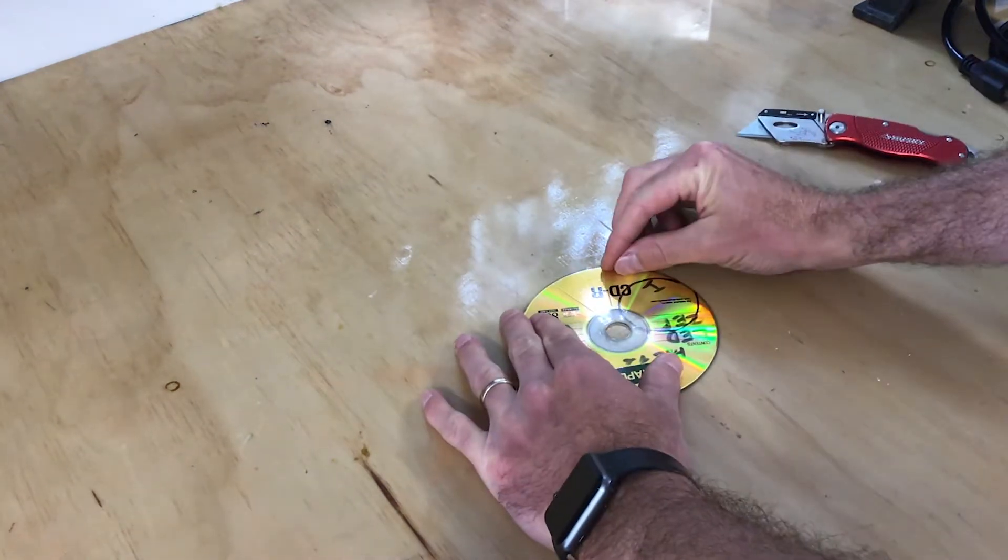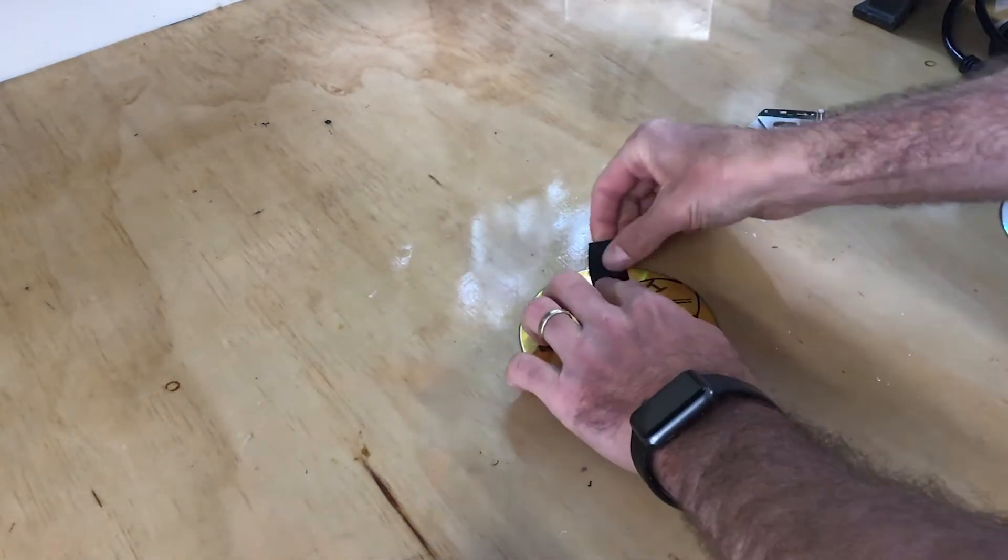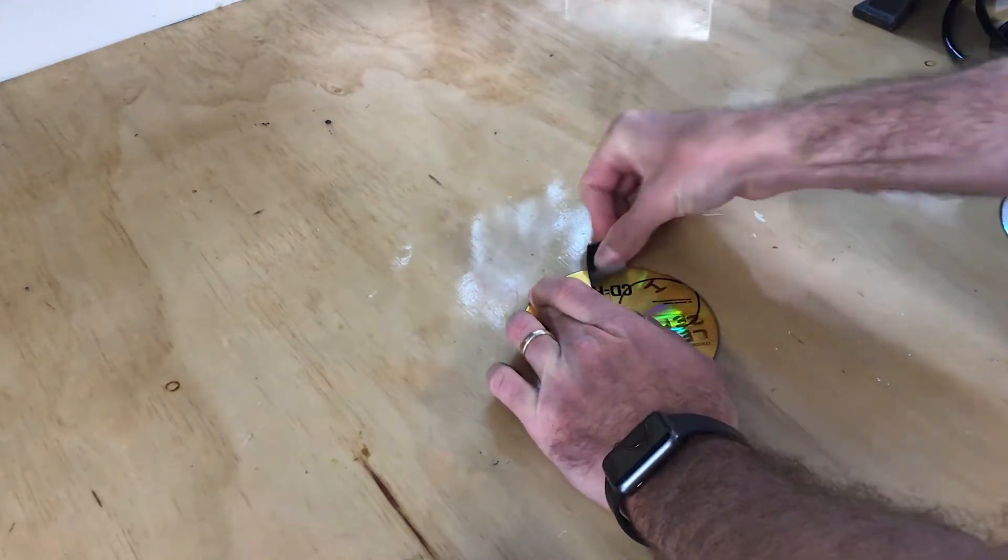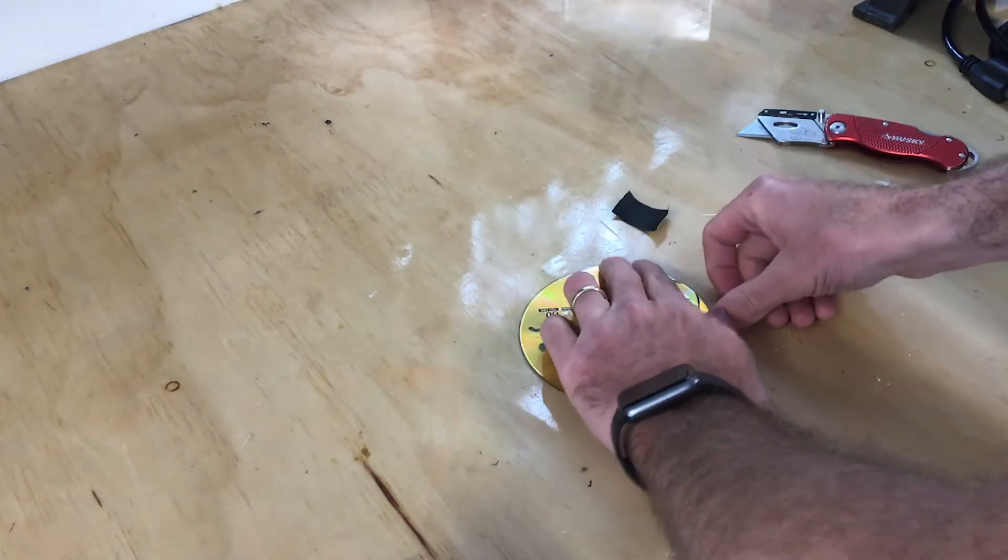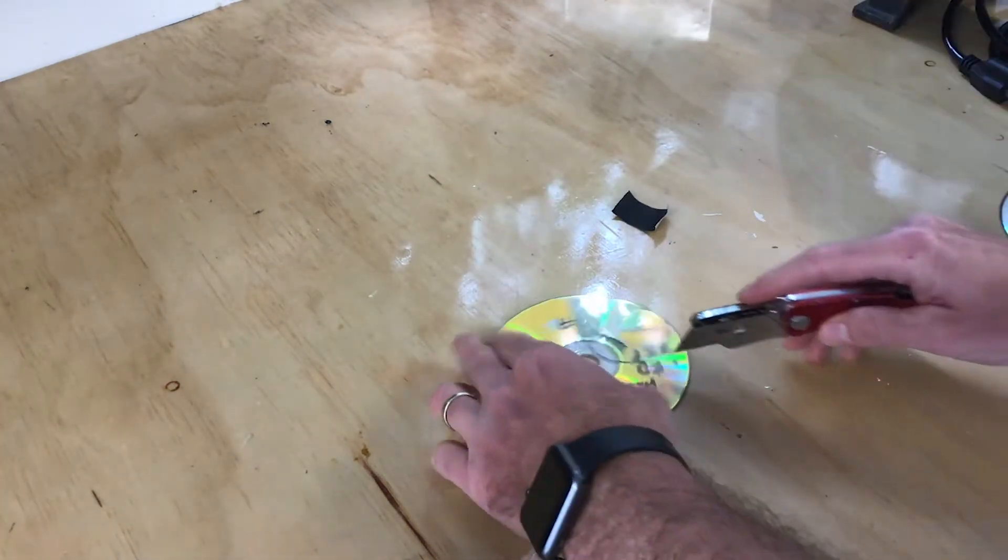Score it with your box cutter and then see if you can start to peel away at it. What I did is use tape to very slowly and tediously peel it off like you're ripping a band-aid off.